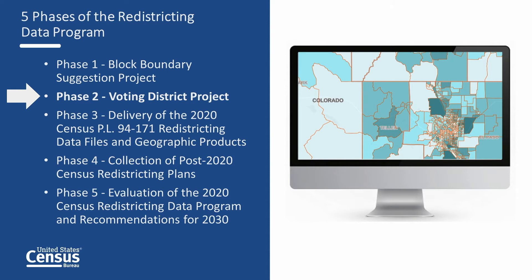Participation in phase two of the redistricting data program was conducted through the non-partisan liaison designated by each state. Phase two was conducted in three cycles. The first two cycles were an initial identification of the voting districts and a verification stage to ensure the suggested updates were accurately applied. The third cycle was an additional round of verification for those states participating in one or both of the first two cycles to further review and adjust the voting district.